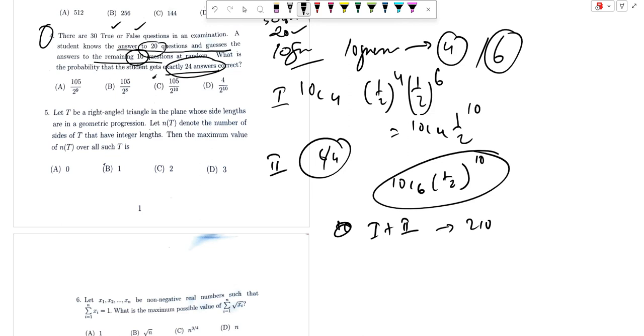This is 210 into 2, that is 420 into half to the power 10. So 420 divided by 1024, which is 105 by 256, 2 to the power 8.